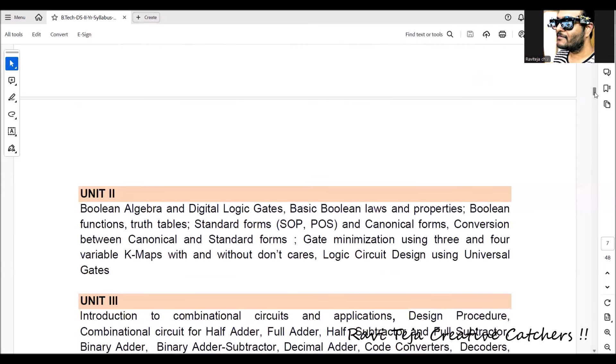Coming to Unit 2, it is completely related to logic gates and its realization. Using Boolean algebra and Boolean laws and properties, we are going to realize several logic gates. We are going to compute sum of products and product of sum, also in canonical forms.